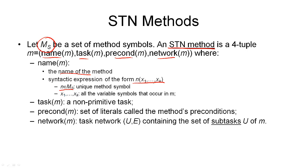These parameters describe the objects that are manipulated by this method. The next component is the task of this method, which is simply one of the non-primitive tasks described earlier. The task of a method describes what can be accomplished with this method, and it must be non-primitive, as all primitive tasks can be accomplished by an operator.